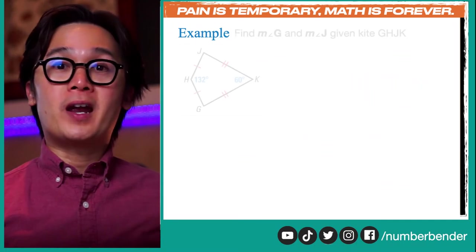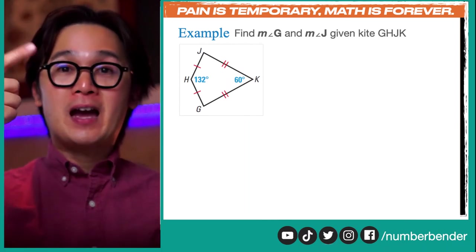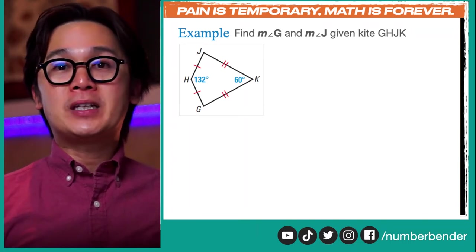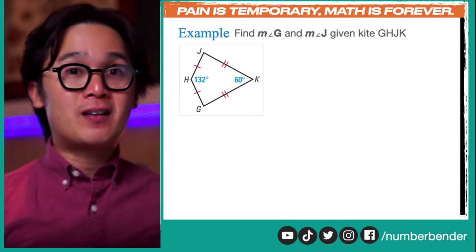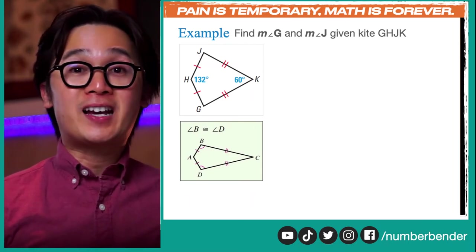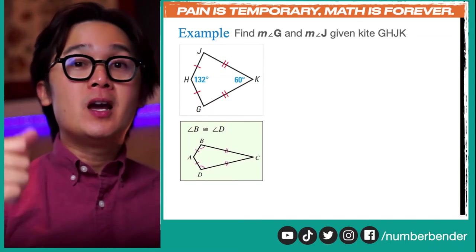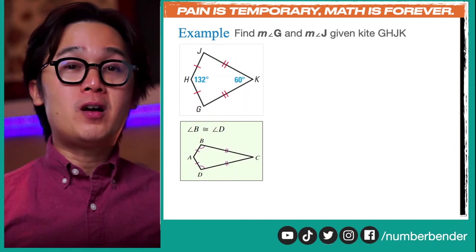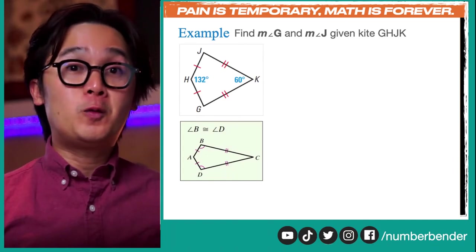Next, let's work with another type of special quadrilateral: a kite. We have a kite where the sides with little congruent markings are shown, and we are given angle H and angle K. We need to find the values of angle J and angle G. To do that, we use the kite property: the opposite angles of a kite between the congruent sides are congruent, so angle J and angle G will be equal, and we can represent both with a single variable.